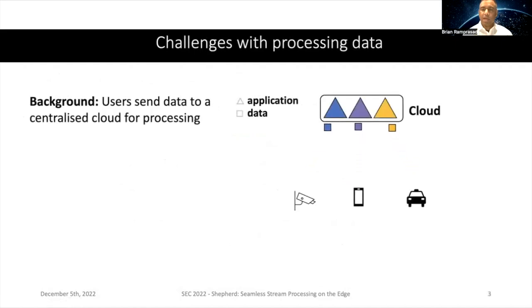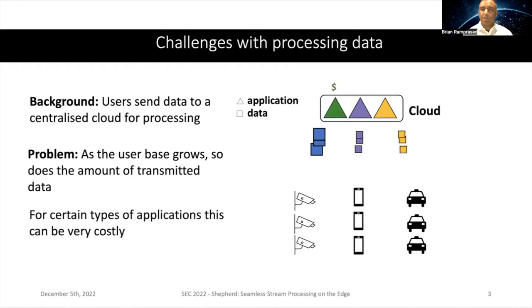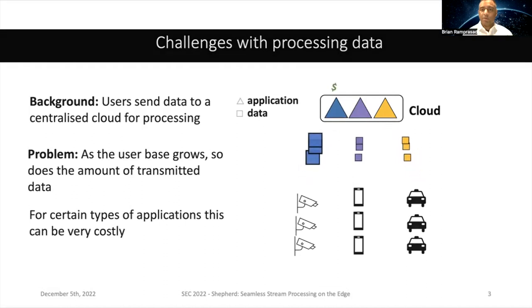So what are the challenges with processing data? Today we're sending all of our data back to the cloud. We have a data source — a camera, a phone, and a car — sending video frames, text data, and location-based numeric information respectively. The problem is that as the user base grows, so does the amount of transmitted data, which can become costly. For video processing applications, this is even more costly because video frames are much larger than text-based data.